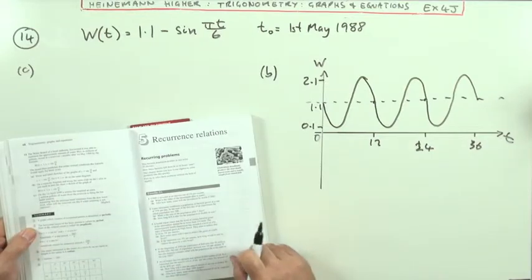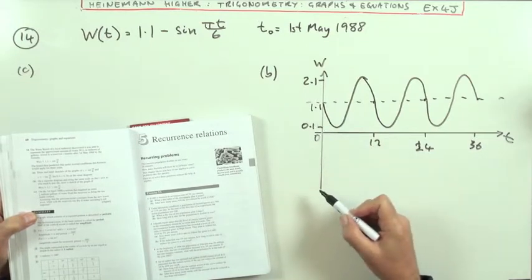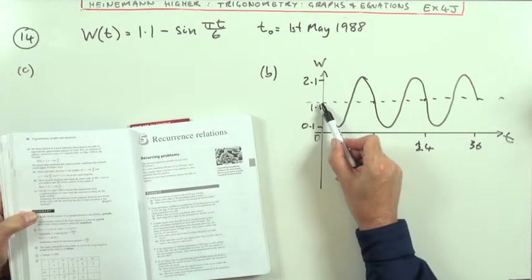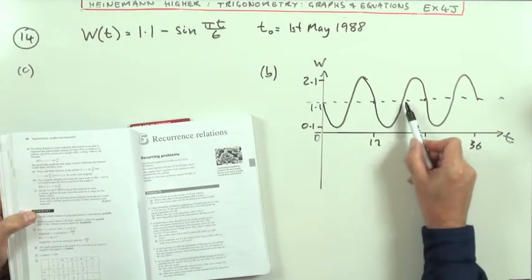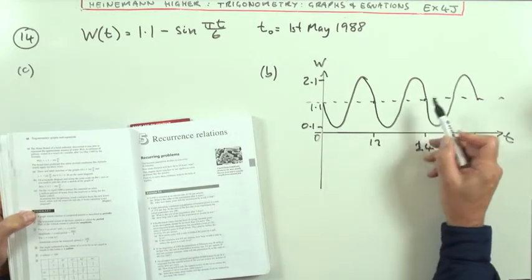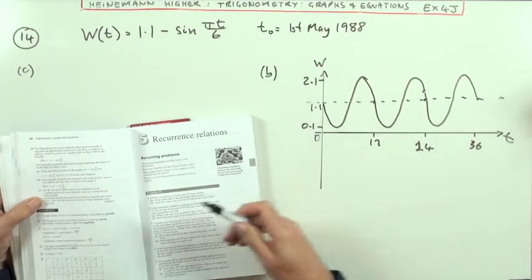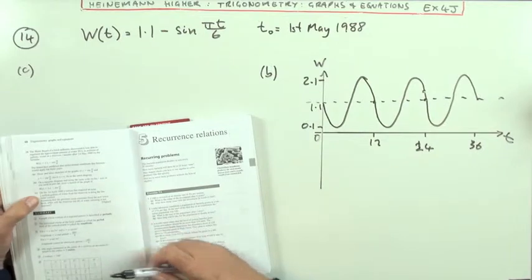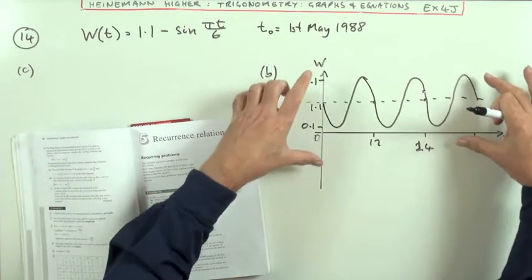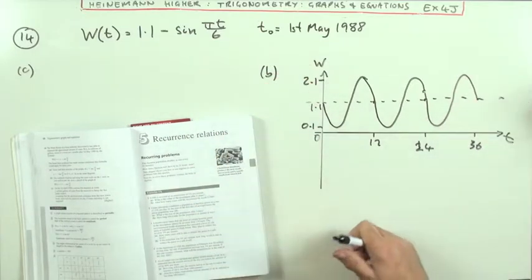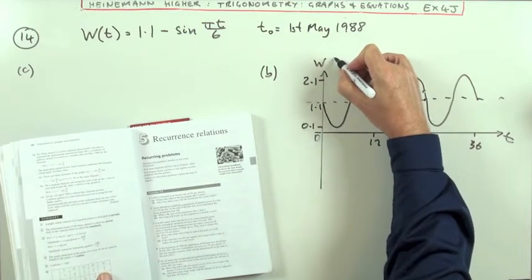Part C. Now it says on the 1st of April 1990, so that's going to be a couple of wavelengths further on, because that was the beginning of May 88, beginning of May 89, beginning of May 1990, but this was April, so this was round about here. At that point, when the water level was there, a serious fire required an extra quarter million gallons to be taken out.